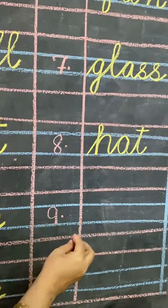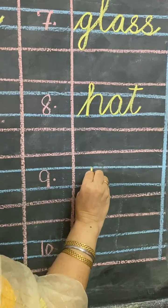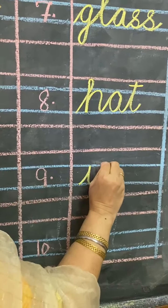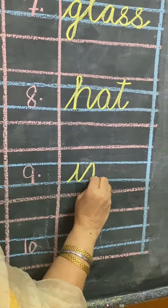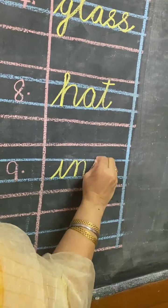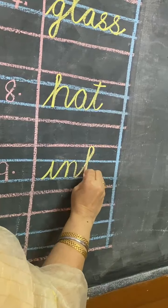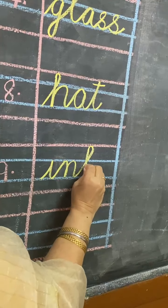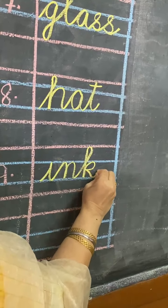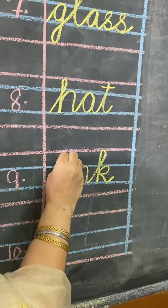Number 9, I for Ink. I will come in two middle lines. N will come in two middle lines. Then K — K will come in upper three lines. I, N, K — ink.